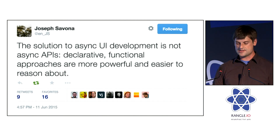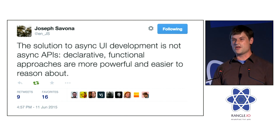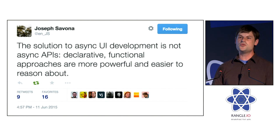To connect this back to the broader context of this conference — this is a tweet from Joe Sivana on the Relay team. This is how I think we should be orienting around these problems, especially in the React community. Async is hard, and as much as we can do that as little as possible and push it out to the edge of the system, there's a lot of impact we can have. React does this really well — your components have a render method, and they return a description of what the DOM should be.